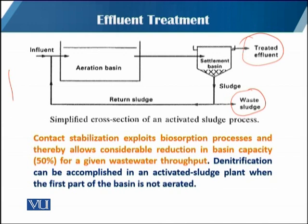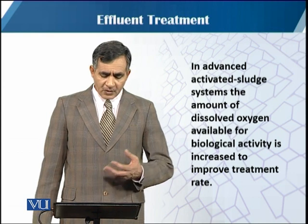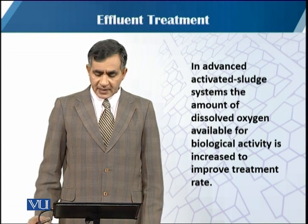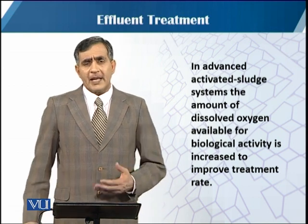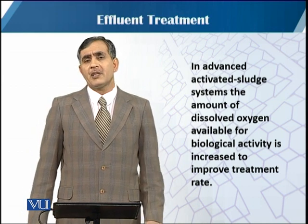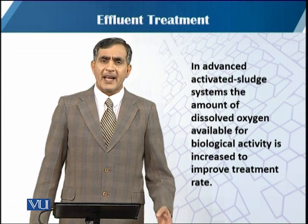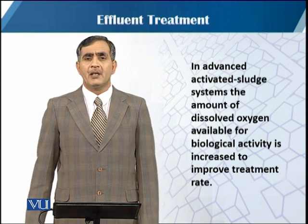Contact stabilization exploits the biosorption process, thereby allowing a considerable reduction in basin capacity — up to 50 percent — for a given water throughput. Denitrification can be accomplished in an activated sludge plant when the first part of the basin is not aerated. In advanced activated sludge treatment plants, the amount of dissolved oxygen available for biological activity is increased to improve the treatment rate. Activated sludge treatment is a biological treatment where the activated sludge — essentially active microorganisms — conditions the effluent.